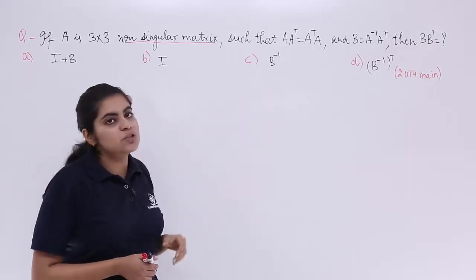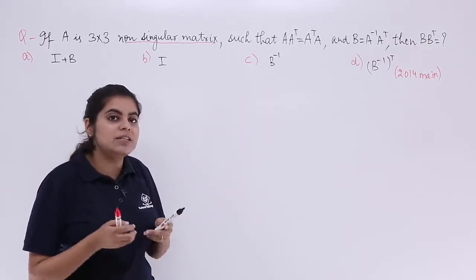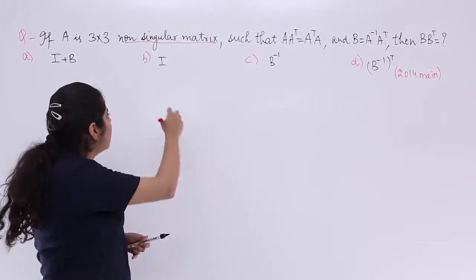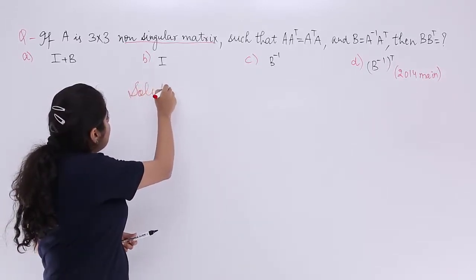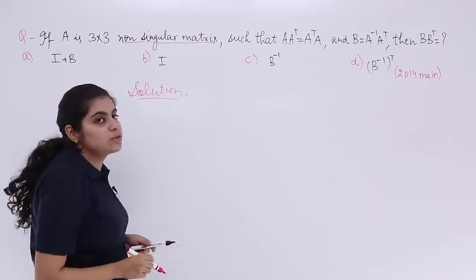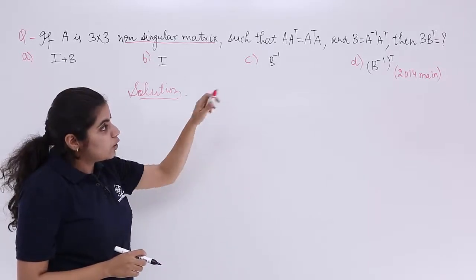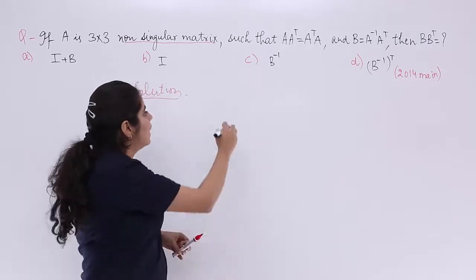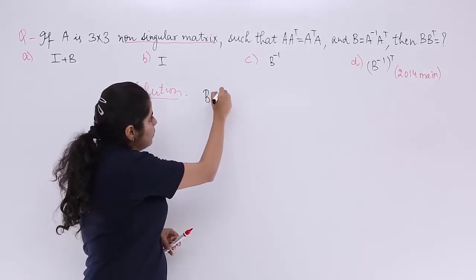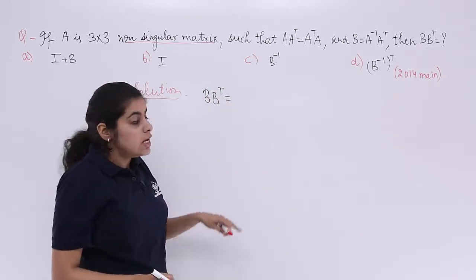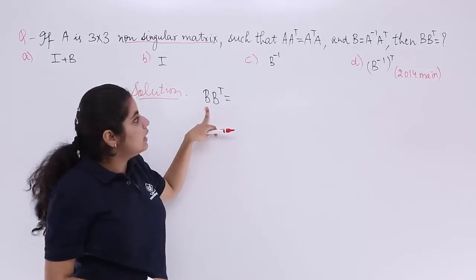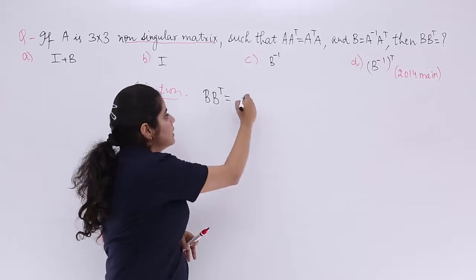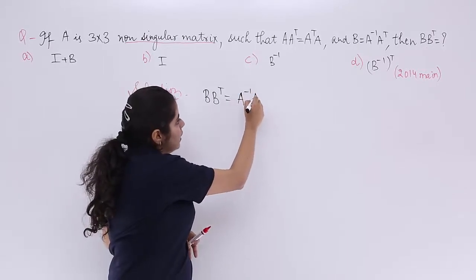These are the 4 options given in the form of ABCD. Let's write the heading 'Solution' and start the problem. The problem concentrates on the value of BB-transpose. Let's write BB-transpose as what we need to get. Now, B is given as A-inverse times A-transpose, so let's write it: A-inverse A-transpose.